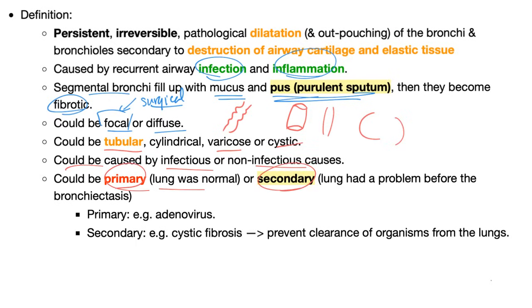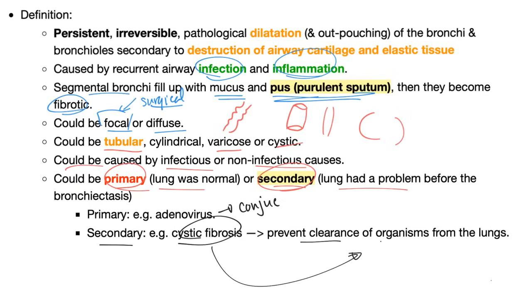In primary bronchiectasis, the lung was normal before; in secondary, the lung had a pre-existing problem — such as cystic fibrosis — before bronchiectasis developed on top of the infection. Primary causes include adenovirus. Whenever you hear 'adeno,' think of conjunctivitis as well. Secondary causes involve prevention of clearance of organisms and debris, leading to bronchiectasis due to infection or inflammation.